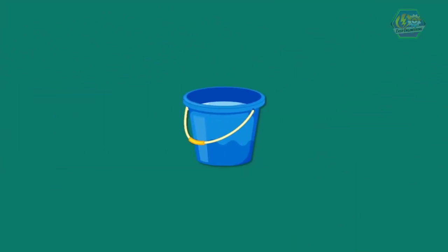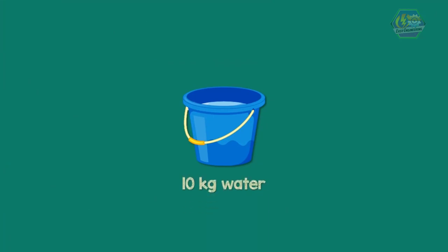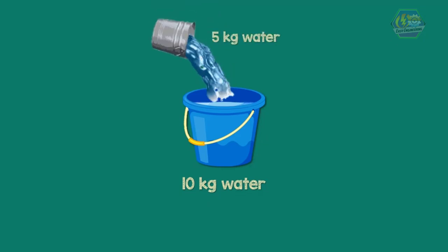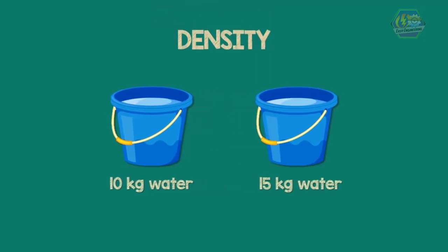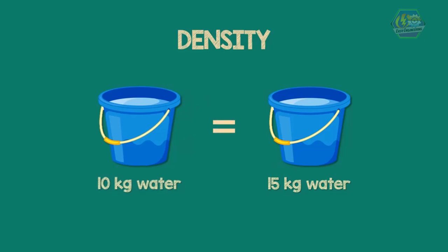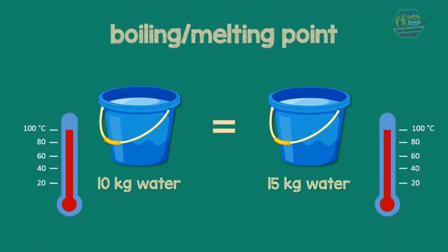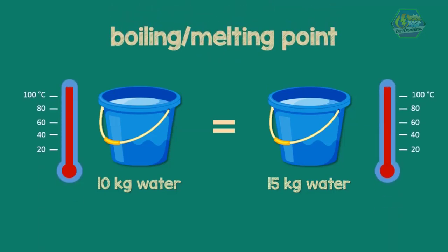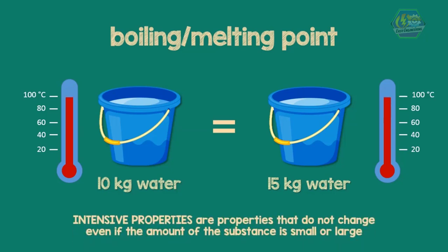Let us take water as an example. A 10-kilogram of water in the pail is color blue. If we add another 5 kilograms of water, the water is still color blue. The density of the 10-kilogram of water is the same as the density of the 15-kilogram of water. In addition, the boiling and melting point of the 10-kilogram of water is the same as the 15 kilograms of water. In other words, intensive properties are those that do not change even if the amount of the substance is small or large.